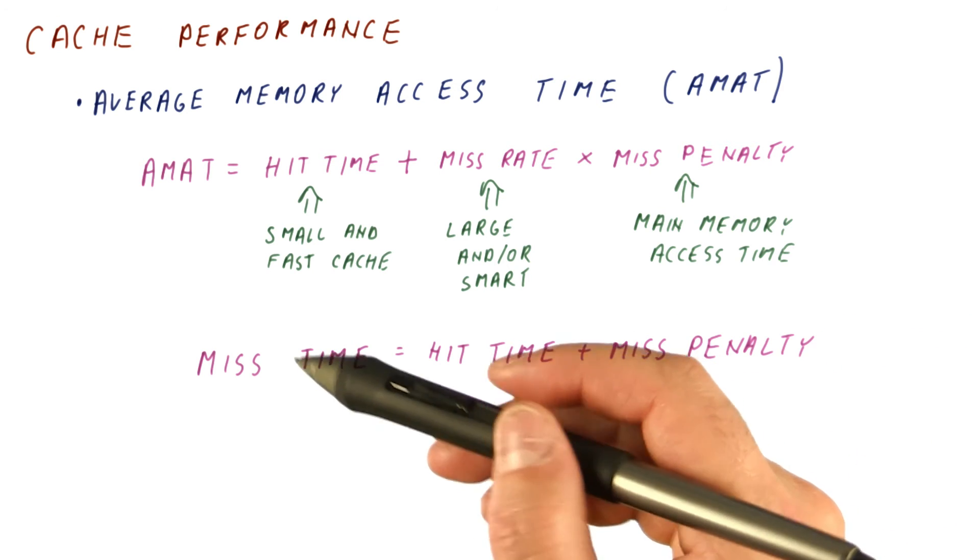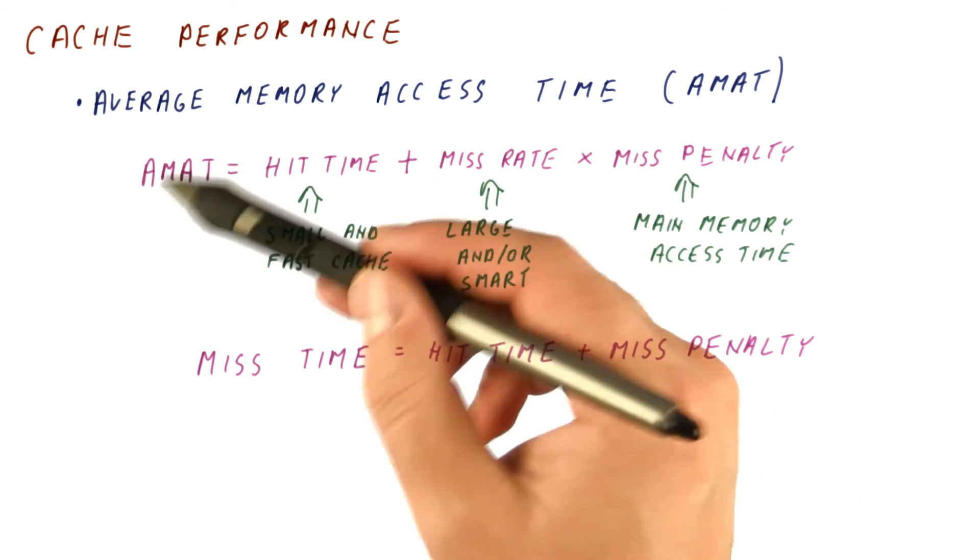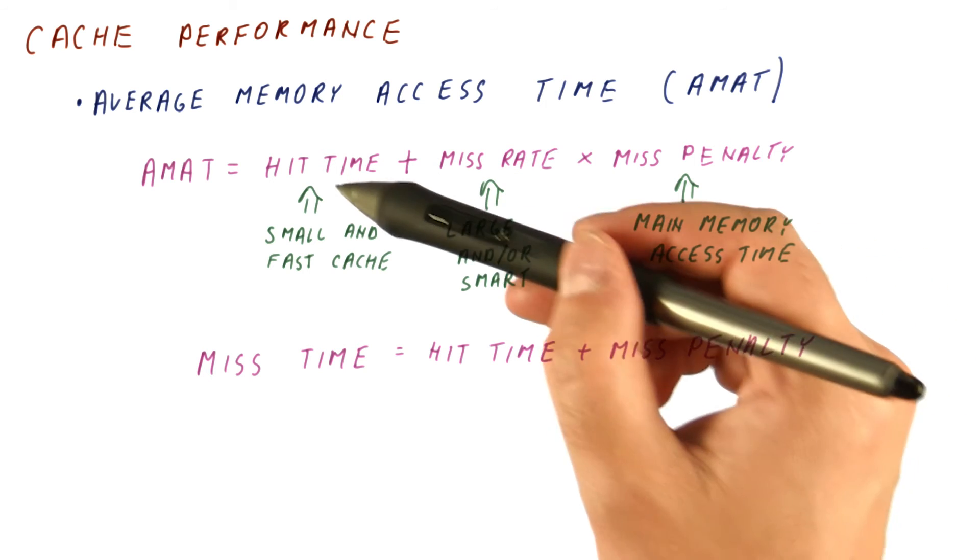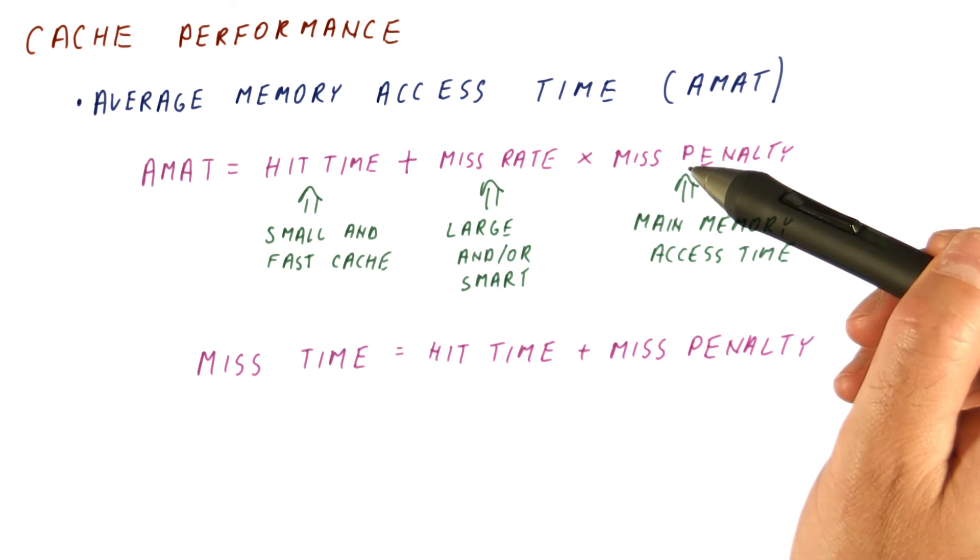We can also think about miss time as the memory access time when we are missing, so miss rate is one. So again, it will be hit time plus the miss penalty.